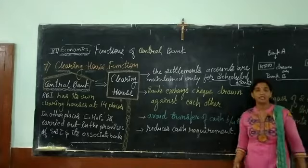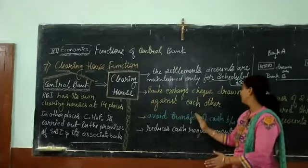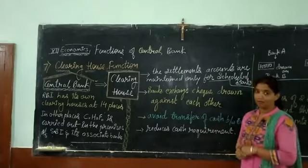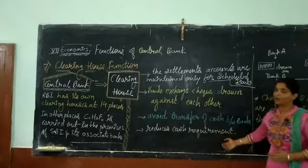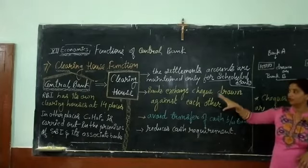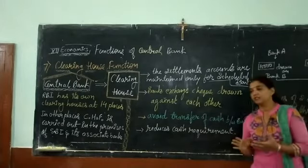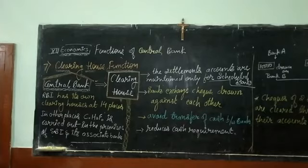The clearinghouse function allows central bank to avoid the transfer of cash between commercial banks. Because of this, it reduces the cash requirement in the economy. We can say that the clearinghouse function is an economical settlement account maintained by central bank to provide check clearance without any cash transfer between different banks.